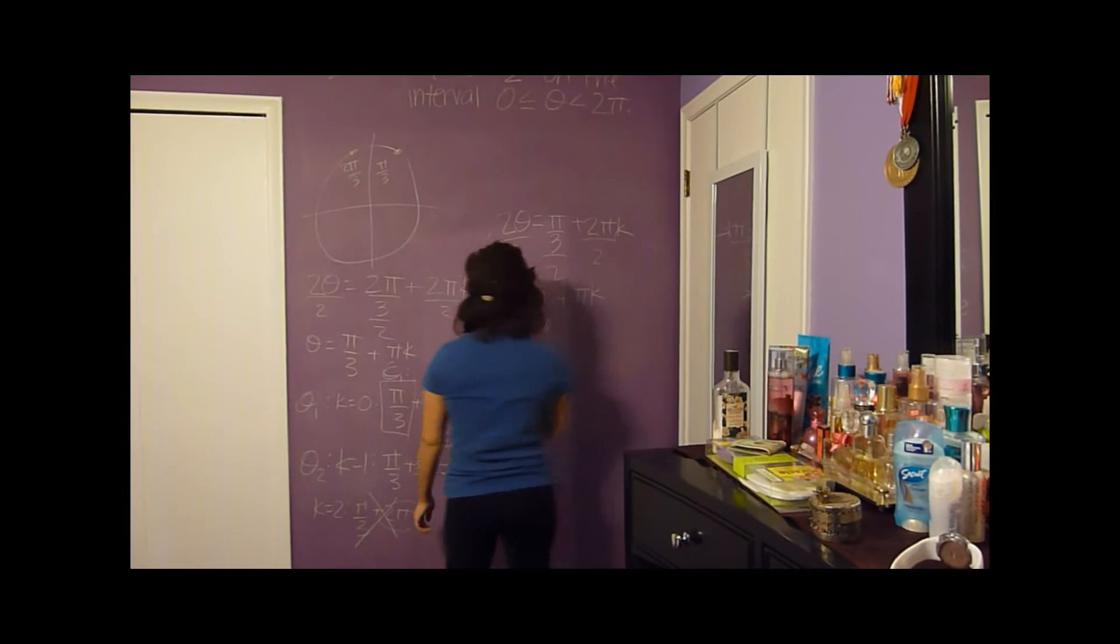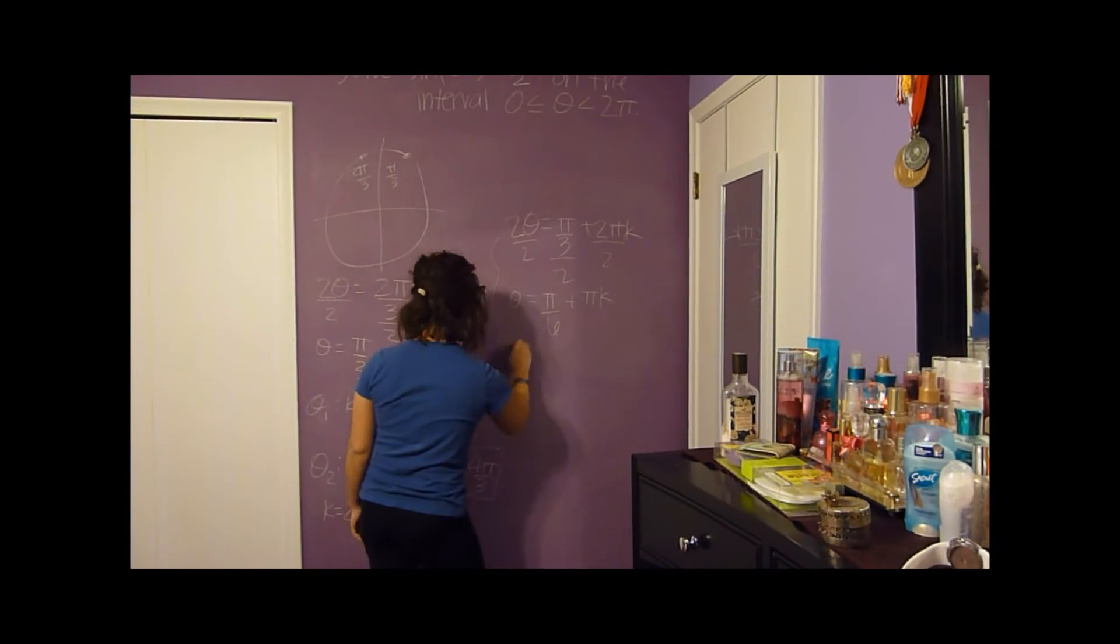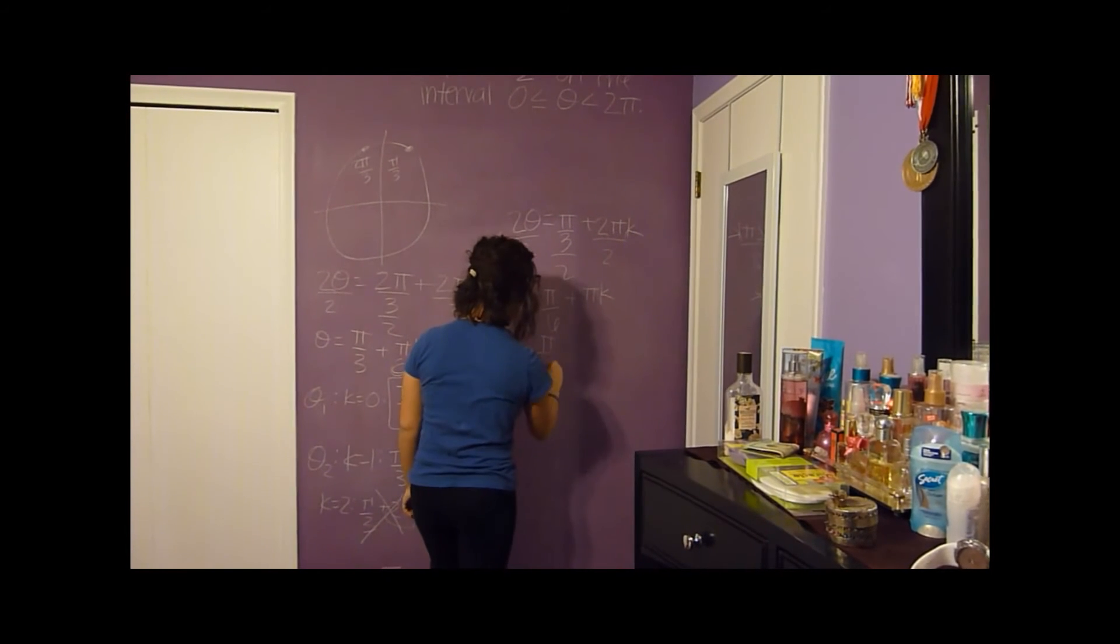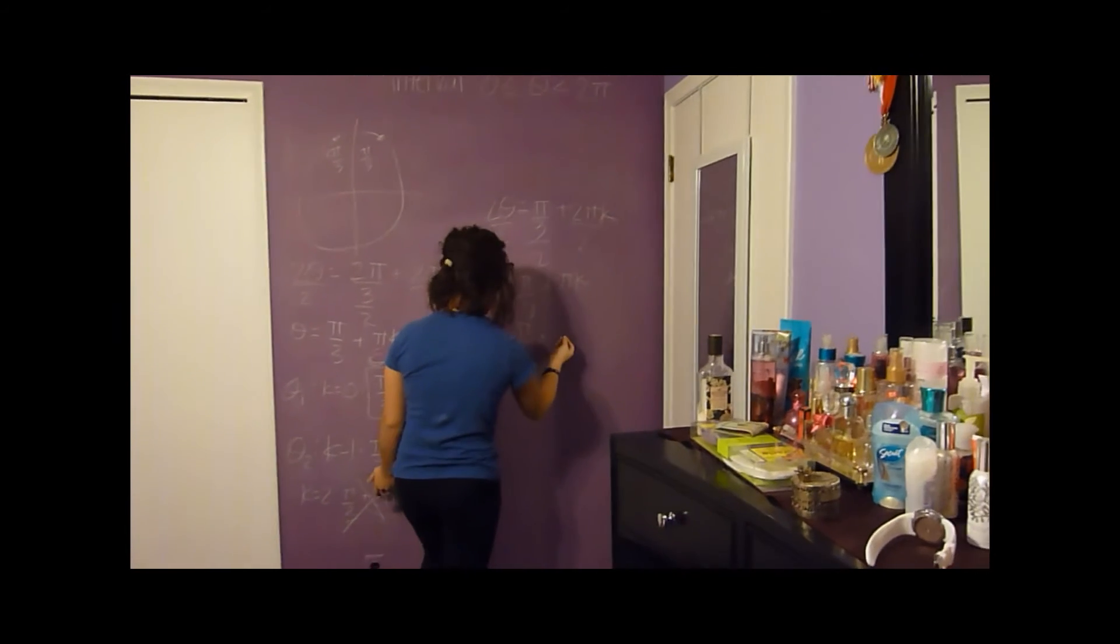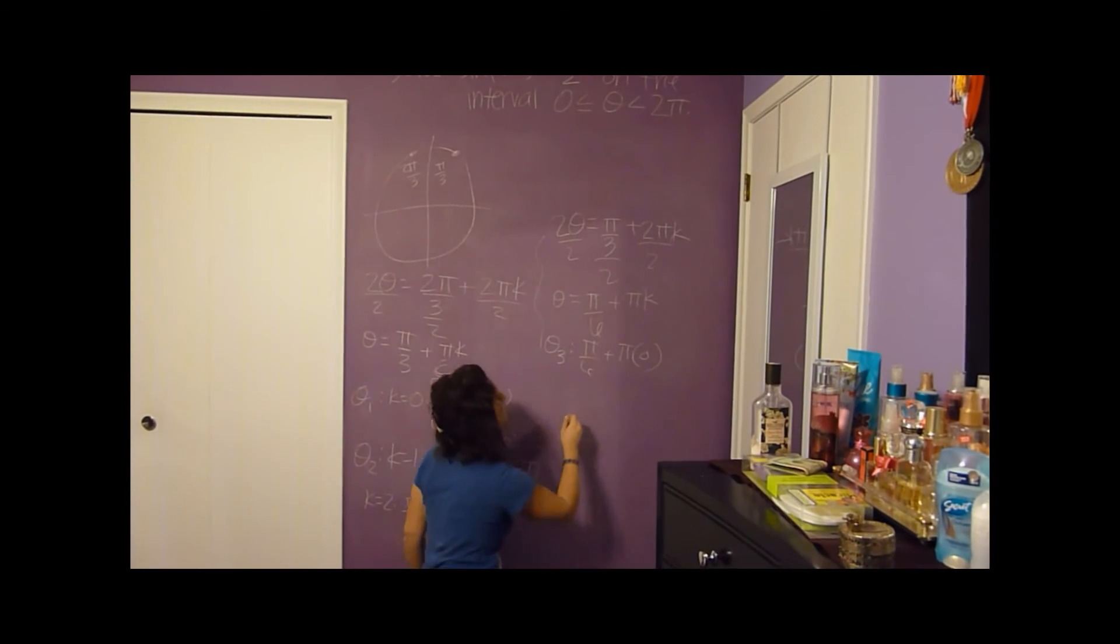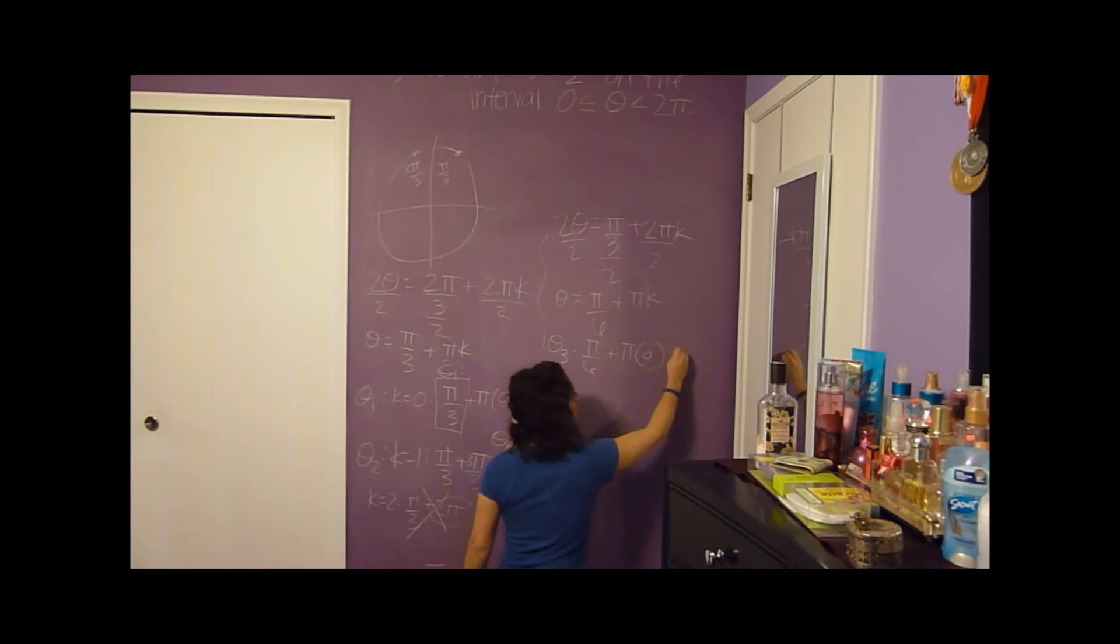And you're going to do the same thing, plug in some integers. So theta 3, pi over 6 plus pi times 0, and you will get pi over 6.